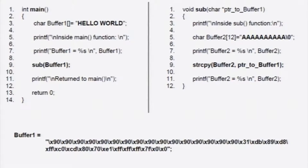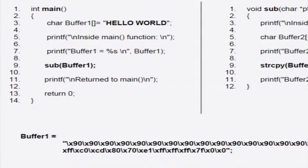Consider the following program. On the left you see the main function, on the right is a subroutine called the sub function. In the main function on line 3 you initialize a character array called buffer 1 which is initialized to the value hello world. This string is of size 12 including the terminating character at the end. On the next line you see a printf statement which indicates that we are inside the main function. After that is a printf function which displays the value of buffer 1, which in this case would be hello world.